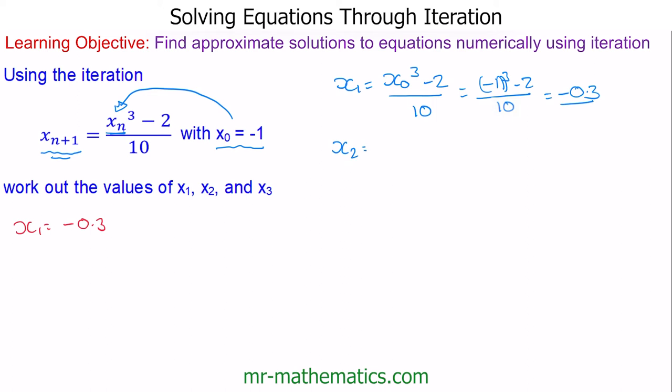To work out x₂, we use x₁: cube it, take away 2, and divide by 10. This gives us -0.2027. To work out x₃, we substitute in x₂, cube it, take away 2, and divide by 10.